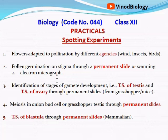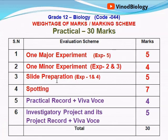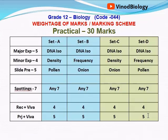To recap the marks: major experiment is 5 marks, minor is 4 marks, slide preparation is 5 marks, spottings is 7 marks, practical record is 4 marks, and project is 5 marks — giving a total of 30 marks.